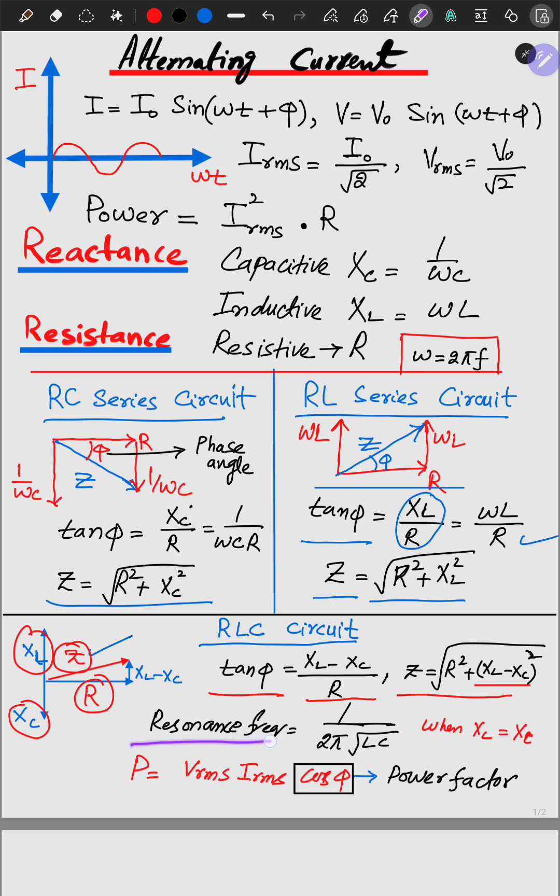While the resonant frequency case, it is equal to 1 over 2 pi L into C square root and this becomes when we get XC is equal to XL. The power is written as VRMS into IRMS into cos phi and the cos phi is actually the power factor.